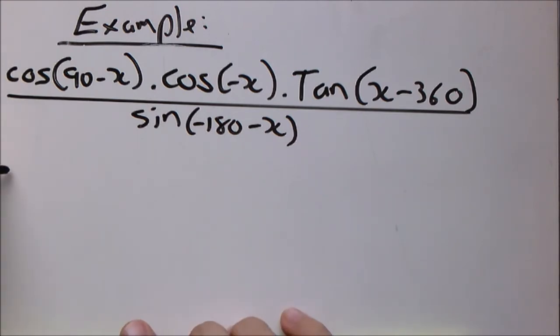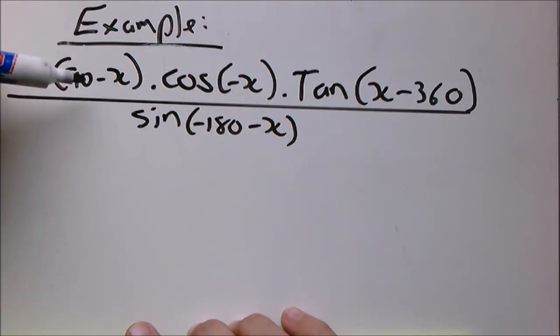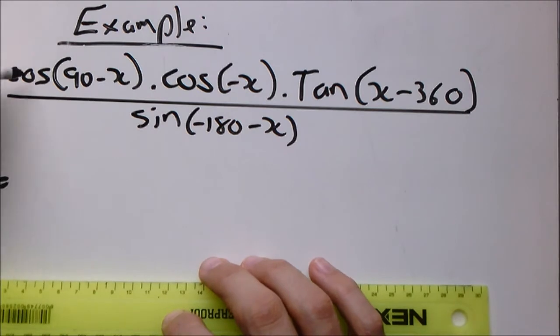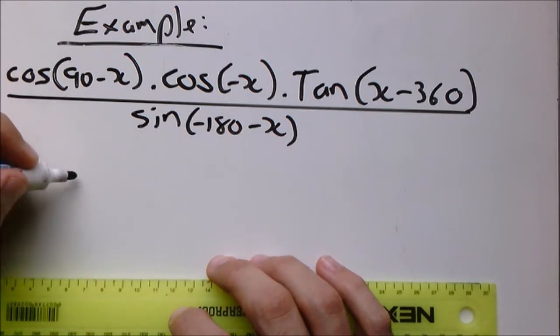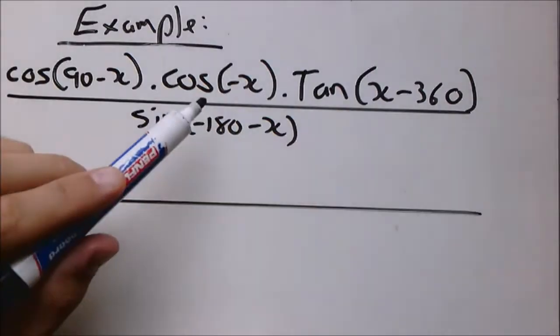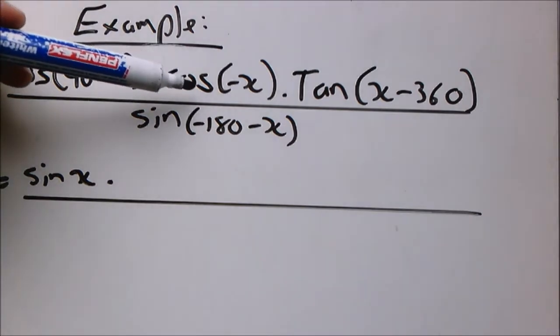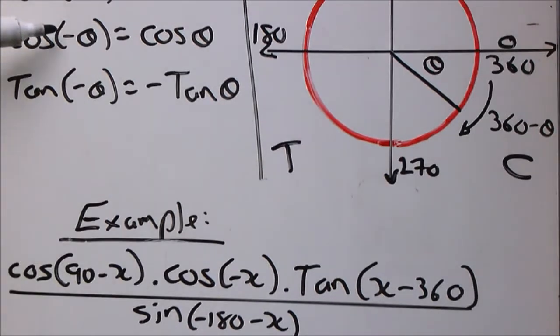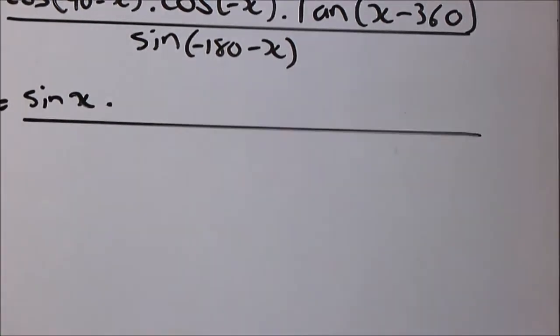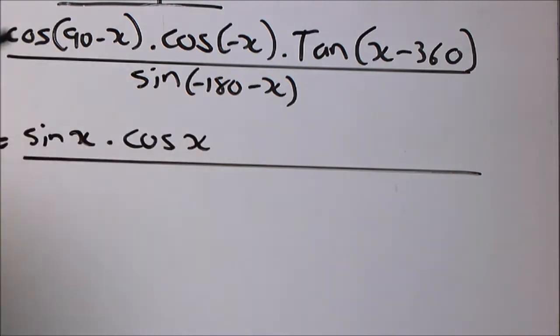So first one, cos 90 minus x. We know that's a reduction formula around 90, so we can immediately write down this one as sine x. Now let's look at cos negative x. We know as previously explained, we can apply the rule, which says cos negative x is cos theta. You understand it's symmetrical. So cos negative x will just become cos x.